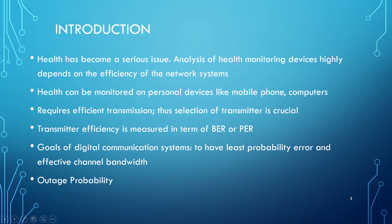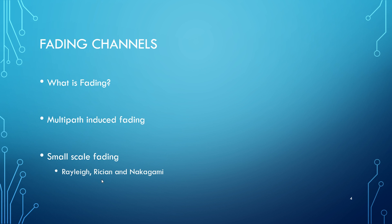Outage probability occurs when the probability falls below the threshold for a given signal-to-noise ratio. Fading channels — what is fading? Fading is the distortion experienced by the carrier modulated signal as it traverses a certain path. Fading is more prominent in multipath propagation. Three examples of small-scale fading are Rayleigh, Rician, and Nakagami.